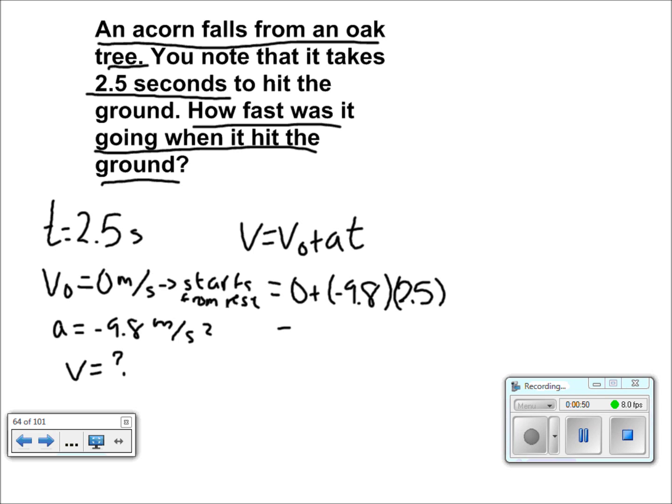We can forget about the zero and multiply our a and t to find a final value of negative 24 meters per second.